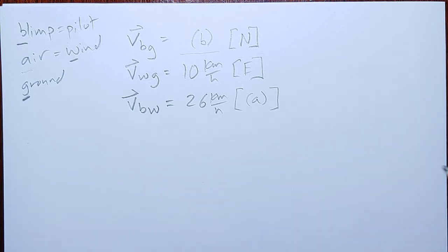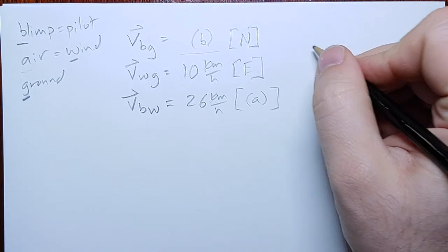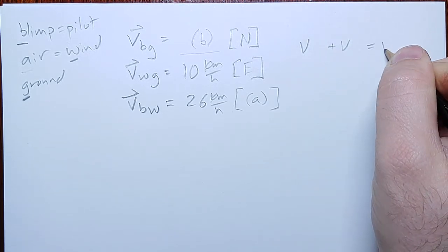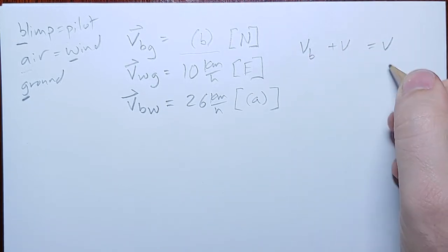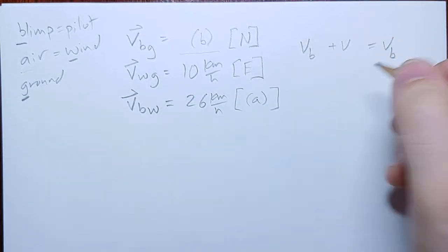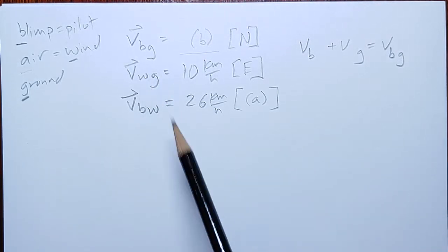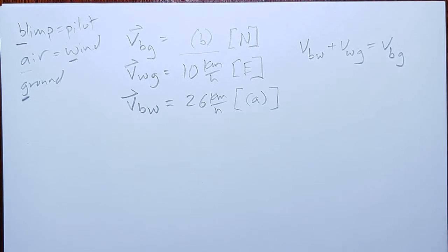Moving on with our solution. The equation we're going to use, we've got some velocity plus some velocity is going to give us some velocity. We've got B at the beginning twice. We've got G at the end twice. And the only one at the beginning and the end is W, so that must be the subscript right here. Cool.